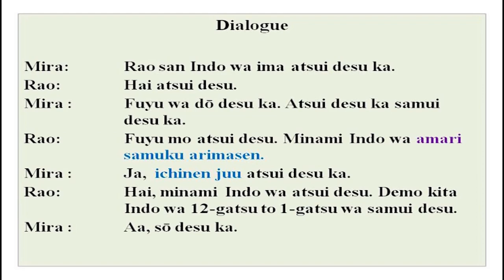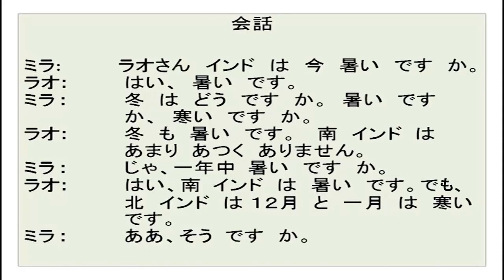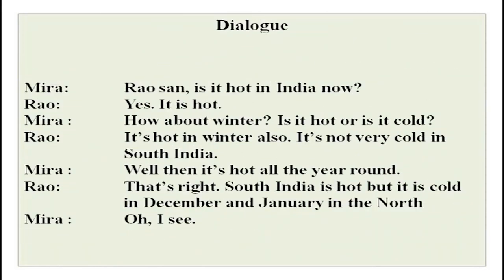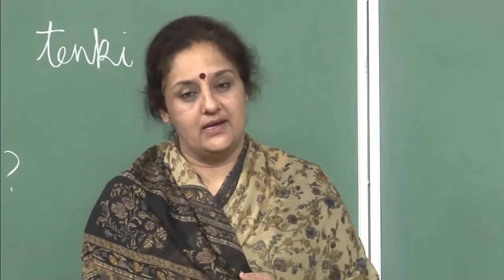We will do samuku arimasen, amari, and ichi nenjuu very soon — this is in the script. Now we have the explanation. This is how you would talk in English — it is not a literal translation. We have done joining two adjectives: i-adjectives and i-adjectives, i-adjectives and na-adjectives, na-adjectives and i-adjectives, na-adjectives and na-adjectives.